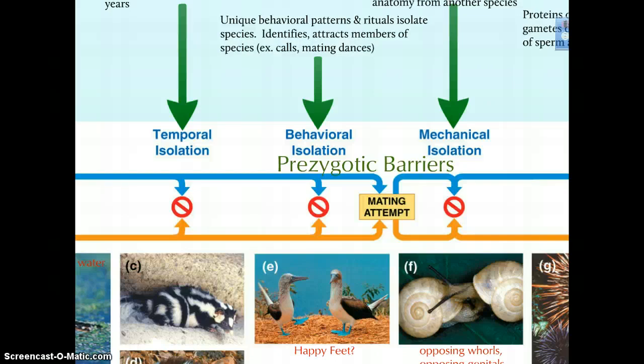Certain behavioral traits or rituals are associated with reproduction. If a subpopulation does not share or perform those rituals, it won't be able to interbreed with other members of the population. For instance, the blue-footed booby males have a dance as part of their courtship ritual to point out their blue feet to females, which helps differentiate them from the red-footed boobies that share territory on the Galapagos Islands.